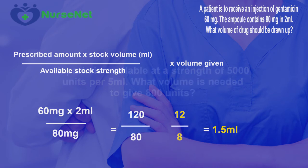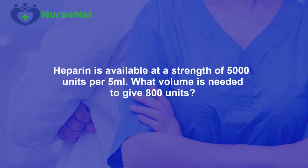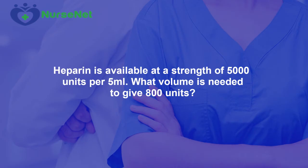So let's try another question. Only this time, consider the way that the question has been worded. Heparin is available at a strength of 5,000 units per 5 ml. What volume is needed to give 800 units? The question is exactly the same as the question we've just completed — it's just been worded in a slightly different way. What volume is needed to give 800 units effectively means that's the prescribed amount.